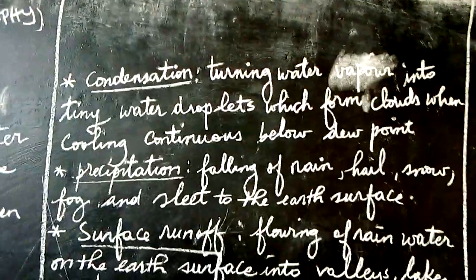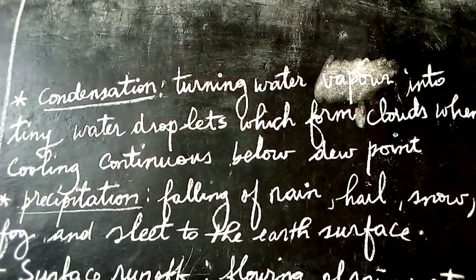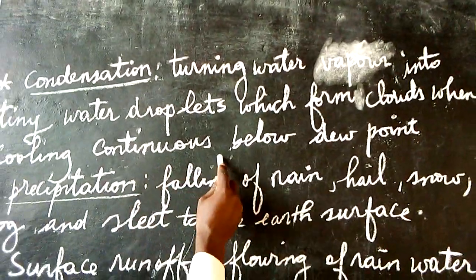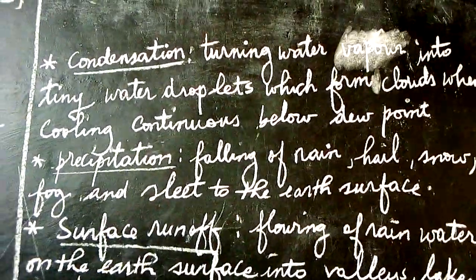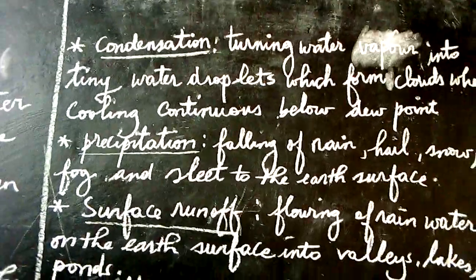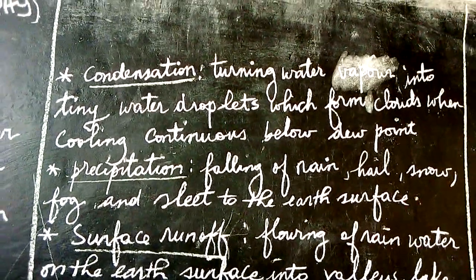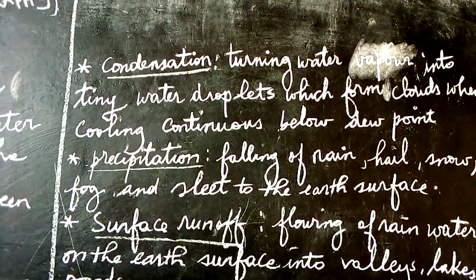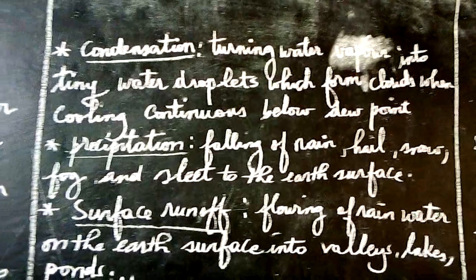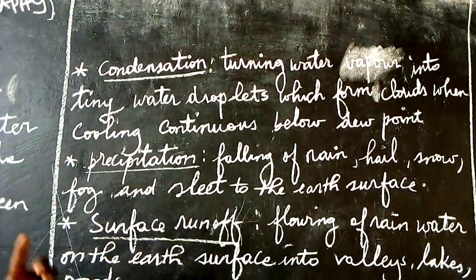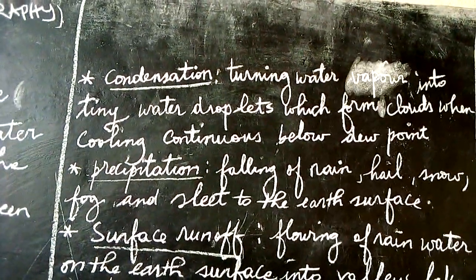Let's go to the next process: condensation. When we talk of condensation, this is the turning of water vapor into thin water droplets which form clouds when cooling continues below a dew point. When the water vapor cools, it will condense, and when condensed it leads to the formation of clouds. Those clouds, when they become too heavy, will fall as rain, hail, snow, fog, or dew.